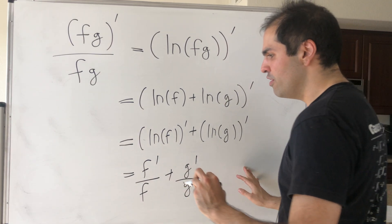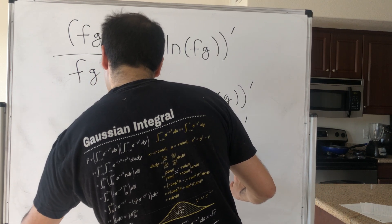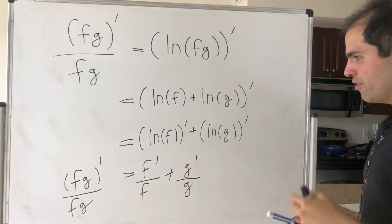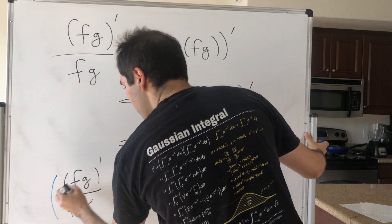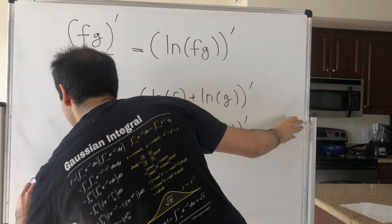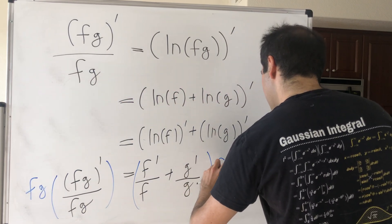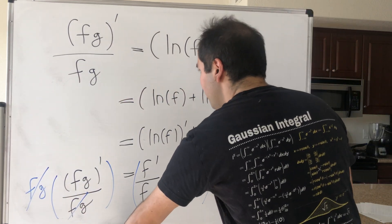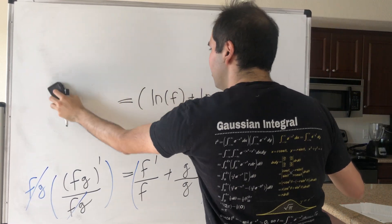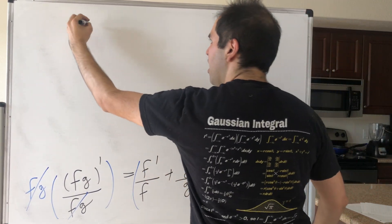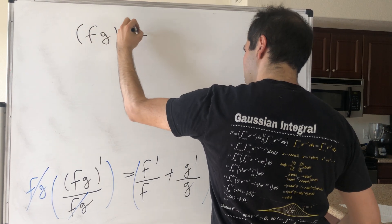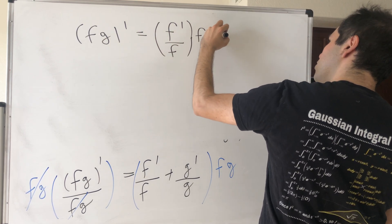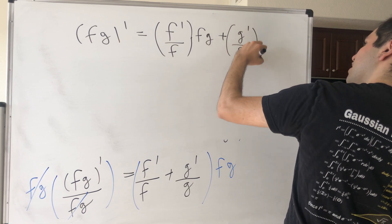So what did we find? We found that fg prime over fg is f prime over f plus g prime over g. And then all you have to do is take both sides and multiply by fg, because on the one hand the fg cancels out, and on the other hand the right-hand side becomes: f prime over f times fg plus g prime over g times fg.